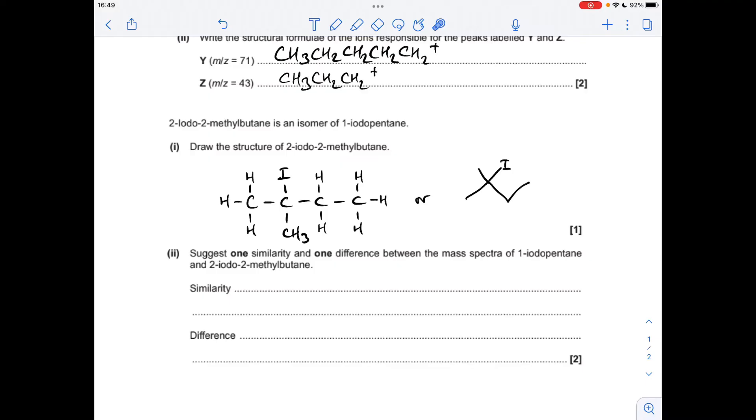Moving on to the next part of the question, we've got an isomer of one iodopentane, two iodo-2-methylbutane. So you could either draw it like that, or the skeletal formula.